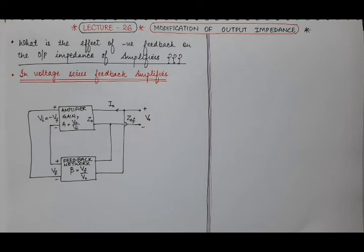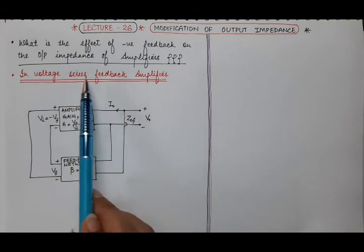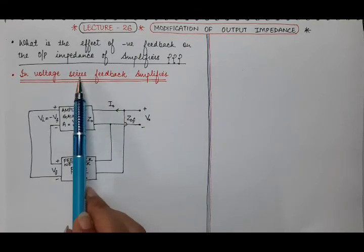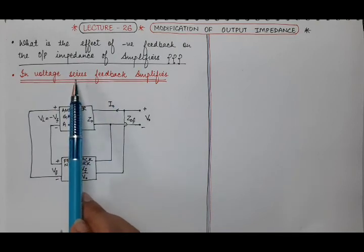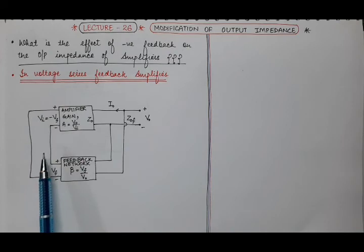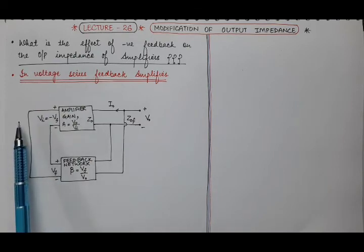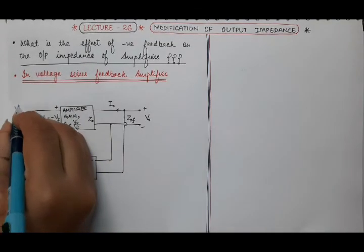First we have considered the case of voltage series feedback amplifier. As the feedback is in series with the input of the amplifier, we use voltage source. But to study the effect of negative feedback on output impedance, the voltage source is shorted. We short circuit the input signal voltage Vs, so Vs is equal to 0 here.